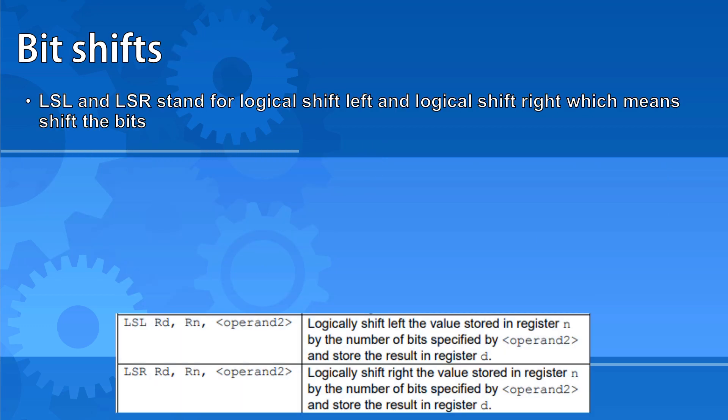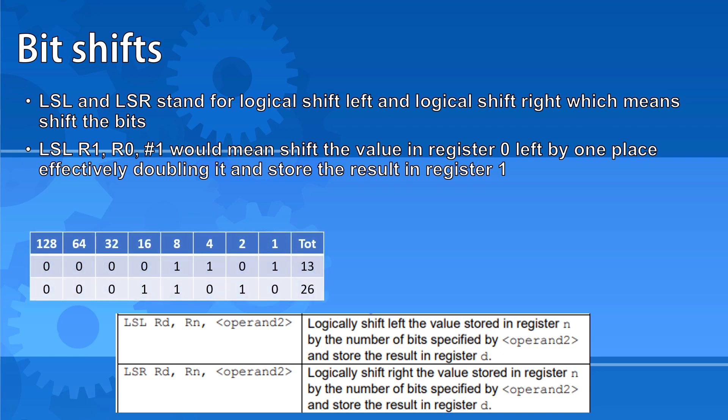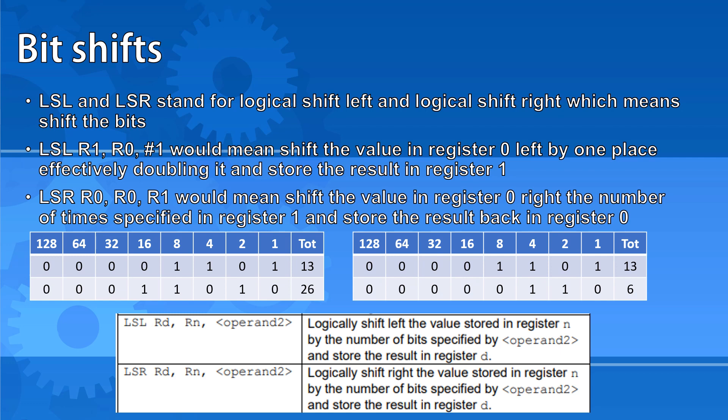LSL and LSR stand for Logical Shift Left and Logical Shift Right, which means shift the bits. LSL R1, R0, #1 would mean shift the value in register 0 left by one place, effectively doubling it, and store the result in register 1. It would not change the value that is in register 0. The command LSR R0, R0, R1 would mean shift the value in register 0 right the number of times specified in register 1, and store the result back in register 0. This would change the result in register 0.